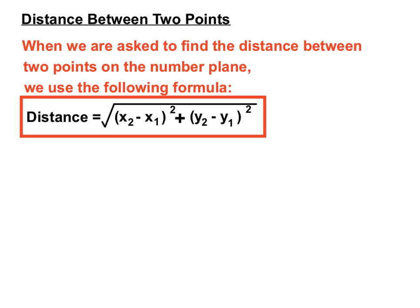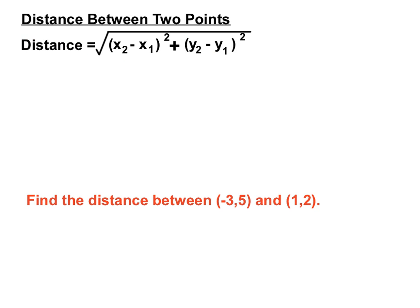Let's see how that works. When we're asked to find, for example, the distance between the point (-3,5) and the point (1,2), we use the coordinates of those two points to substitute into the distance formula and find the distance between those two points.